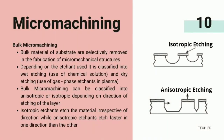Bulk micromachining: here, bulk material of the substrate is selectively removed in the fabrication of micromechanical structures. Depending on the etchant used, it is classified into wet etching, which uses chemical solution, and dry etching, which uses gas phase etchants in plasma. Bulk micromachining can also be classified into anisotropic or isotropic depending on the direction of etching of the layer. Isotropic etchants etch the material irrespective of direction, while anisotropic etchants etch faster in one direction than the other.